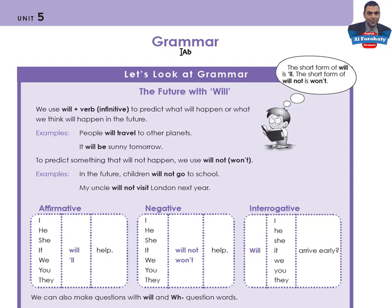Let's go to page 44 of your skills book — Unit 5 Grammar. We studied this in the previous lesson, so let me remind you of the form and use of this tense. We use 'will' plus a verb in the infinitive to form this tense, and we use it to predict what will happen or what we think will happen in the future.